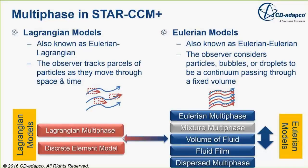Under the Eulerian model, where the observer considers the phases to be continuous and they pass through a fixed volume in space and time, we have different options: an Eulerian Multiphase option, Volume of Fluid option, Fluid Film option, Mixed Multiphase option, and Dispersed Multiphase option. We'll see what each of them are as we go forward.